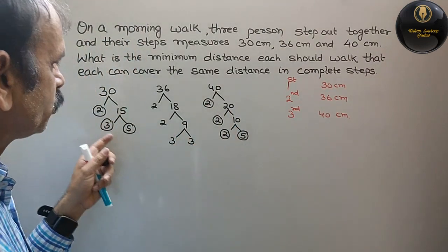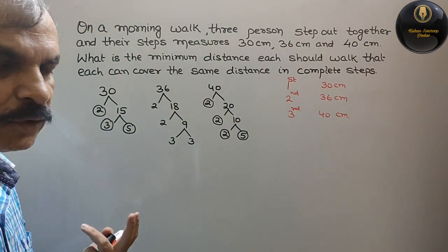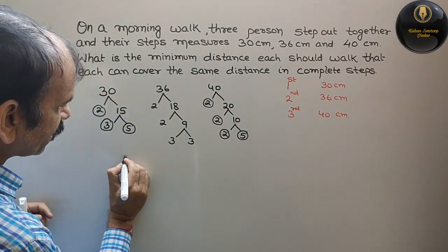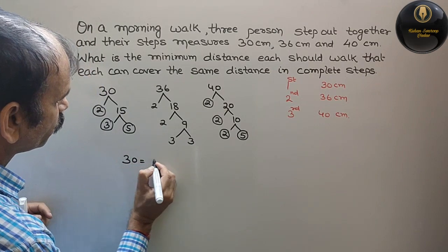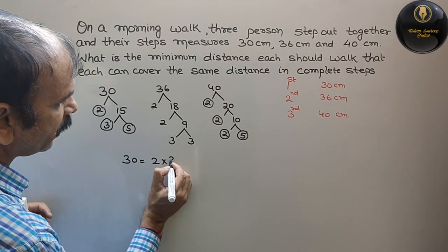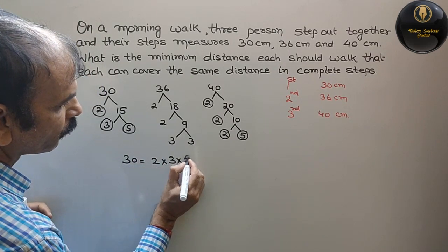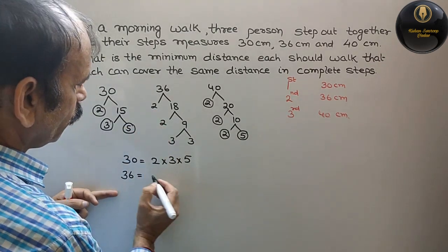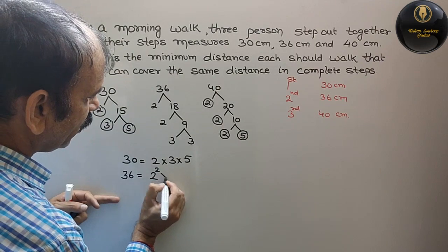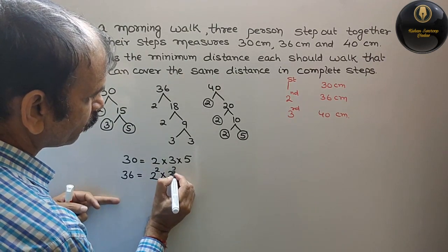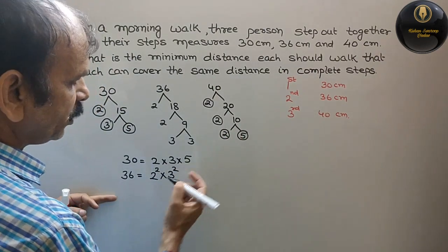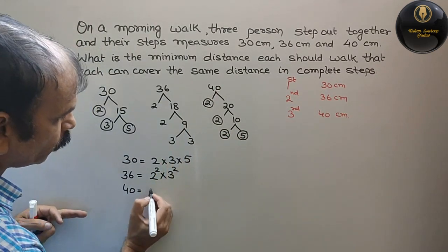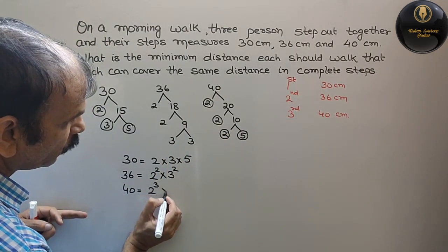So now how do we write it? Normal exponent form. That means 30 is equal to 2 into 3 into 5. 36 is equal to 2 square into 3 square. 40 is equal to 2 cube into 5.